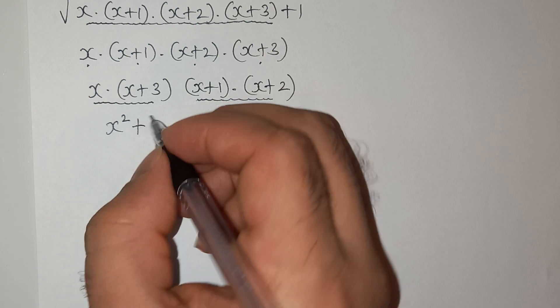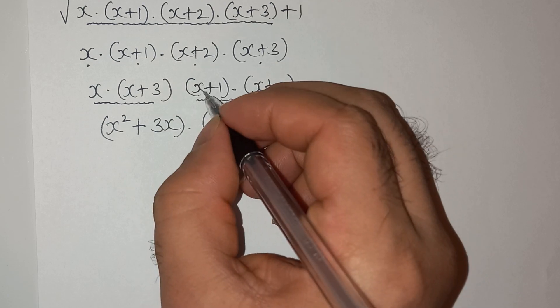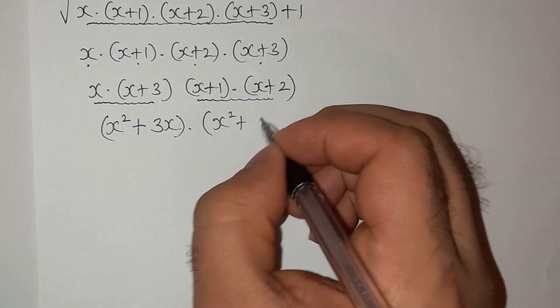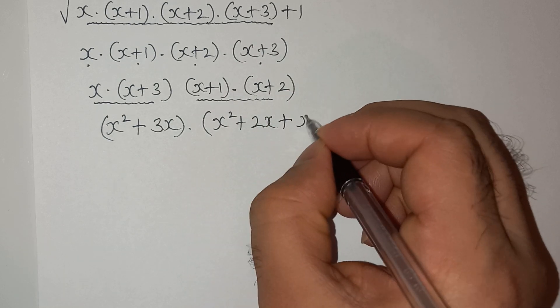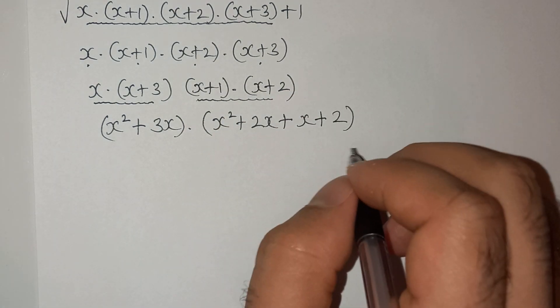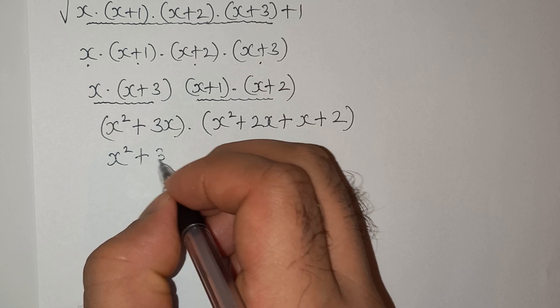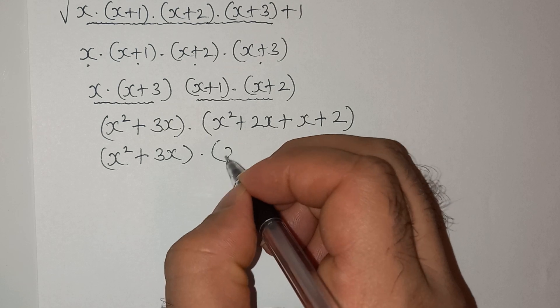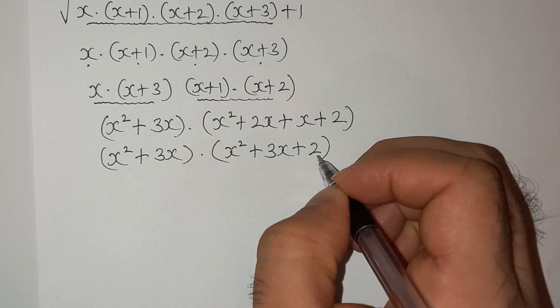So now let's multiply these two. This will be (x² + 3x) multiplied by (x² + 3x + 2). So this is (x² + 3x) multiplied by (x² + 3x + 2).